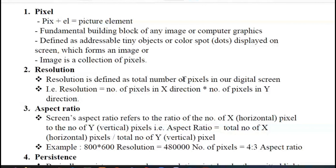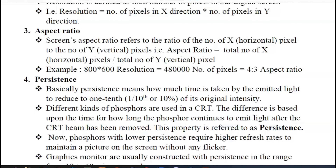Aspect ratio is defined as the division of pixels. What is the x-direction? The y-direction is defined. What is the ratio of the pixel? Aspect ratio refers to the ratio of the number of horizontal pixels to the number of vertical pixels.